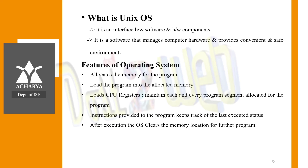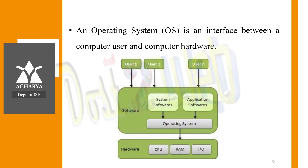Looking at the operating system architecture: at the bottom you have hardware — RAM, CPU, input/output devices, and all input hardware. On top of that you install the operating system, which is itself a set of programs. Within that software layer you have system software and application software, used by several users who communicate with the system to perform operations. This is the normal architecture of an operating system.